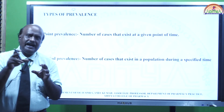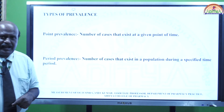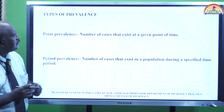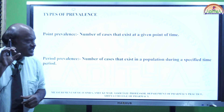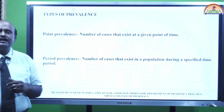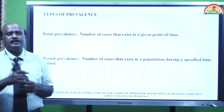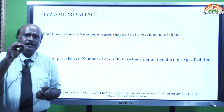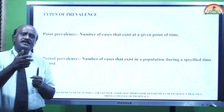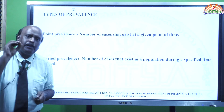Prevalence can be of two types: point prevalence or period prevalence. Point prevalence is the number of cases that exist at a given point of time — for example, in a particular week or a particular month. It consists of the old cases plus new cases at that particular time, and this is called point prevalence.